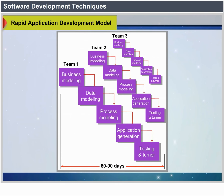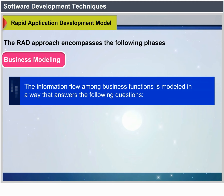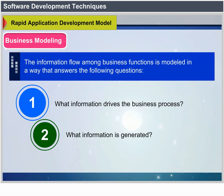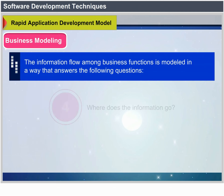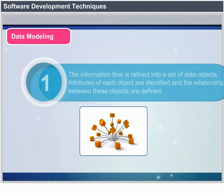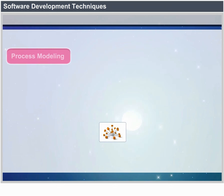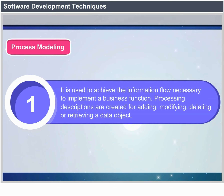The RAD approach encompasses the following phases. Business Modeling: the information flow among business functions is modeled to answer questions such as what information drives the business process, what information is generated, who generates it, where does it go, and who processes it. The information flow is defined into a set of data objects, attributes of each object are identified, and relationships between objects are defined. Process Modeling: processing descriptions are created for adding, modifying, deleting or retrieving a data object.